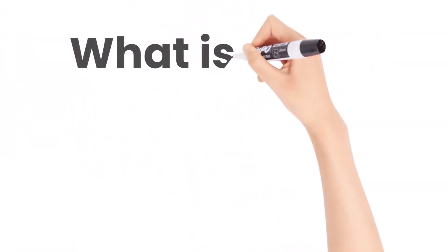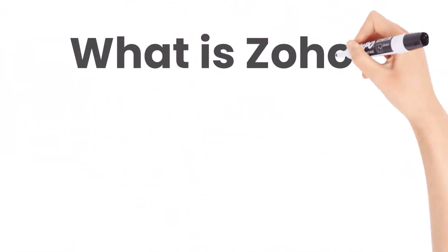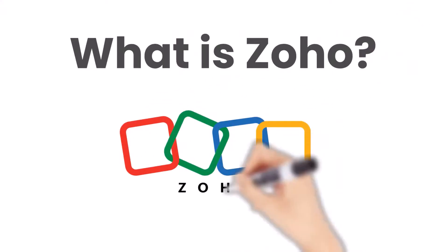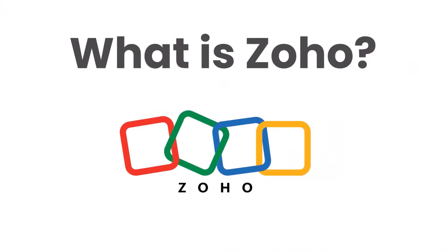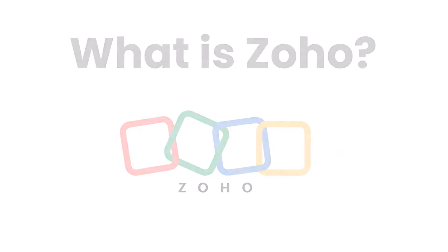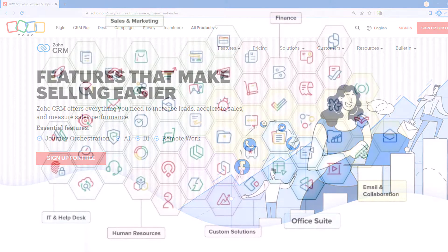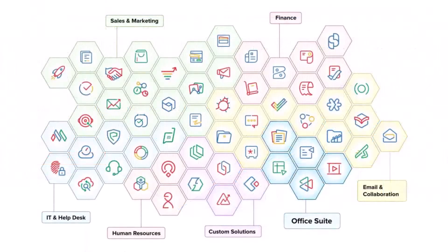What is Zoho? I hear this question a lot, even though Zoho has proven to be one of the most successful business software solution providers over the past 25 years. Zoho is best known for their customer relationship management, or CRM, software, but they currently have over 55 different applications that cover just about every business need.